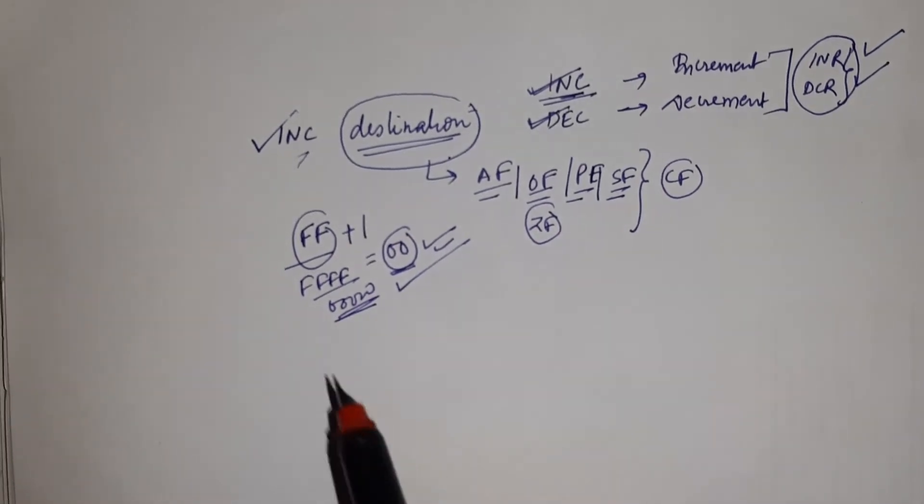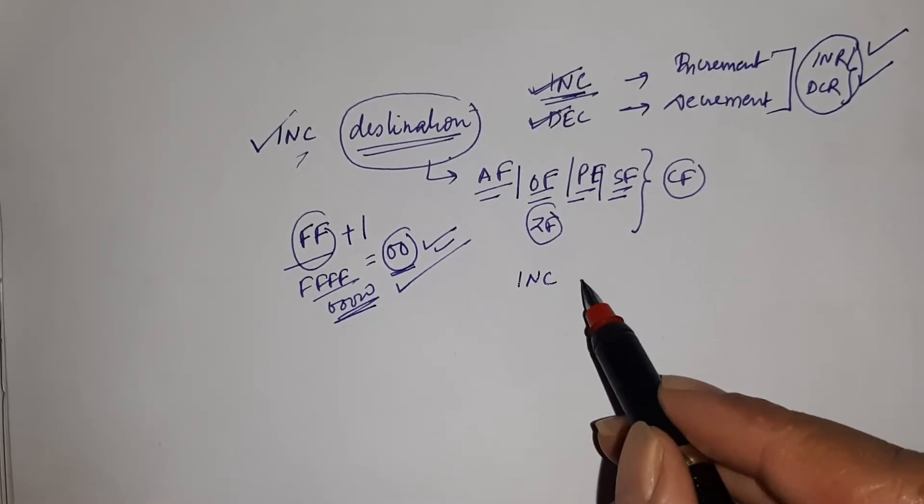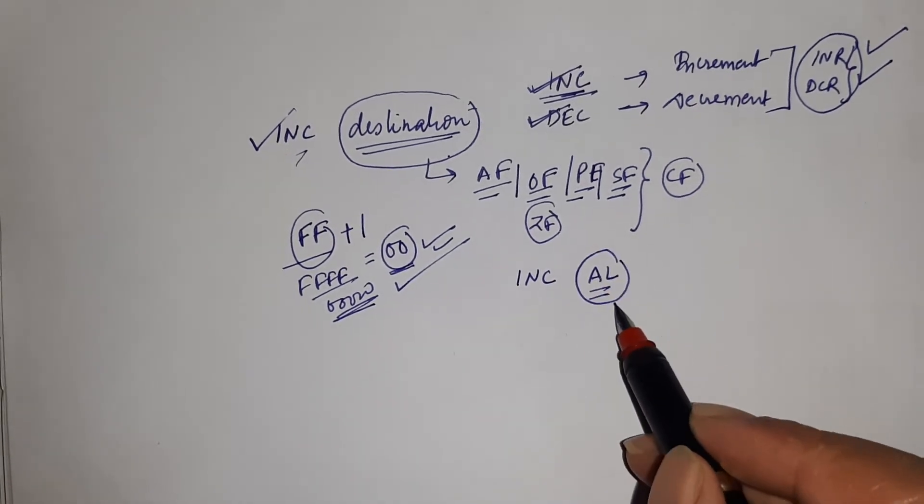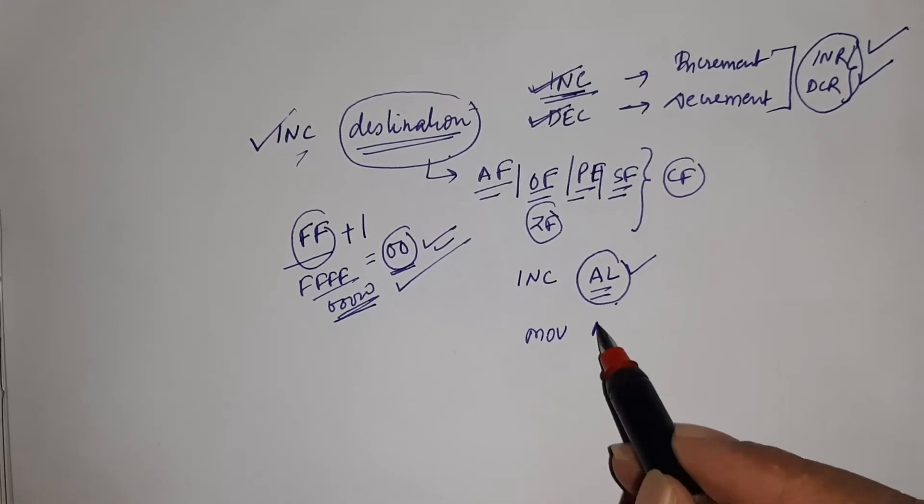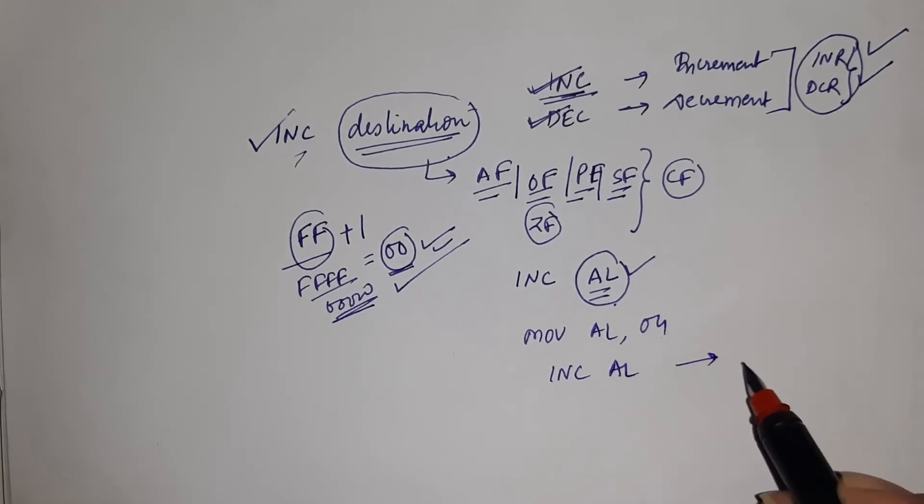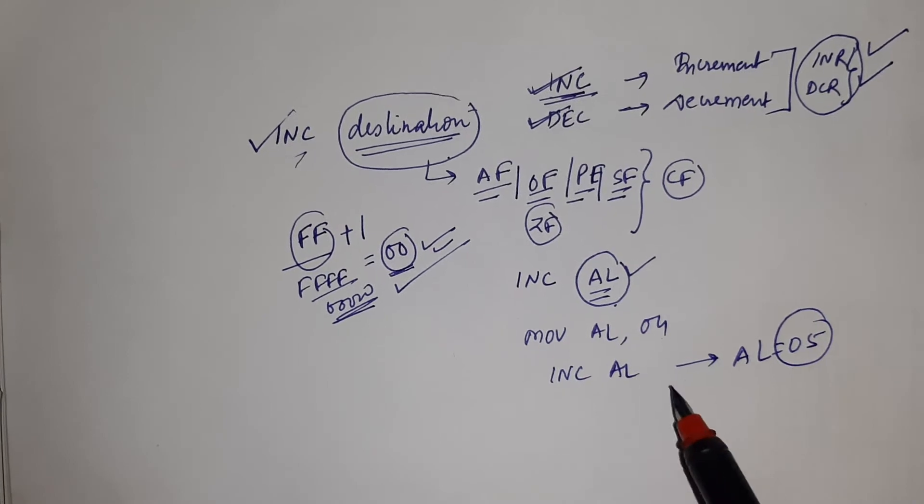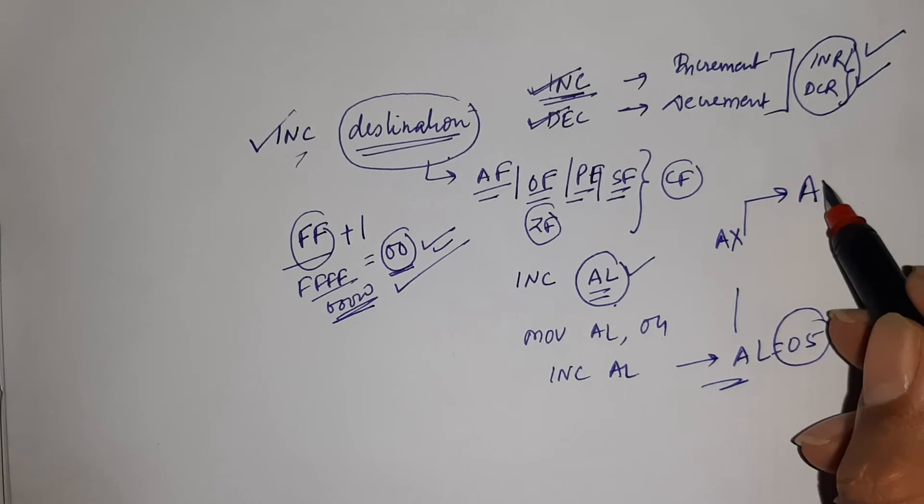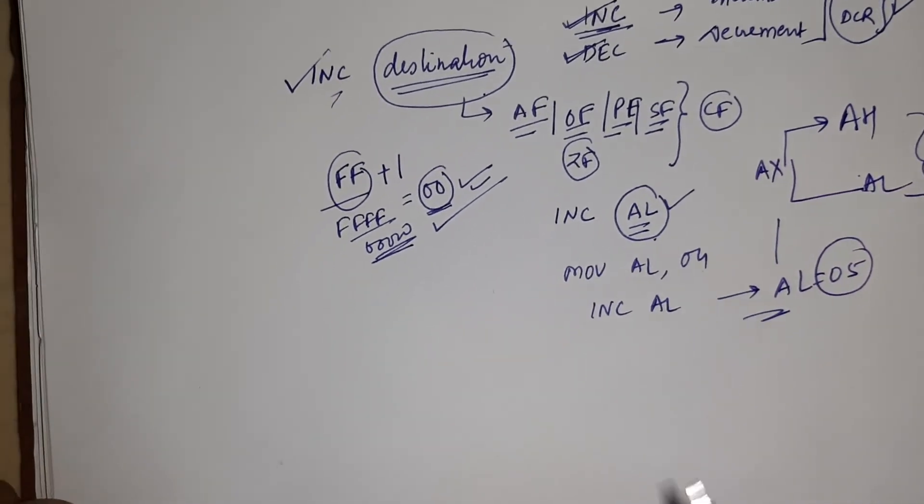This is basically the working of INC and DEC. Now take some examples. Suppose I have written INC AL. The meaning of this is whatever content is available in AL, that will be incremented by 1. Suppose MOV AL, 04. When INC AL, now the content of AL will be 05. AL means, you know, AX is divided into parts AH and AL. So this is basically AL.